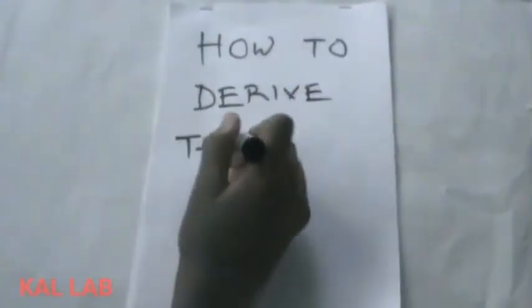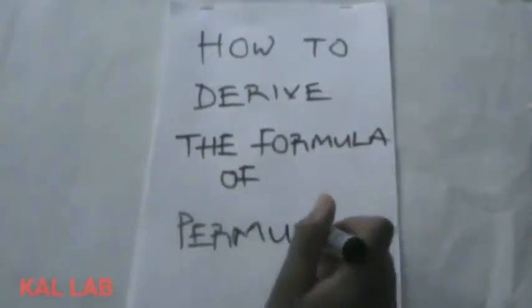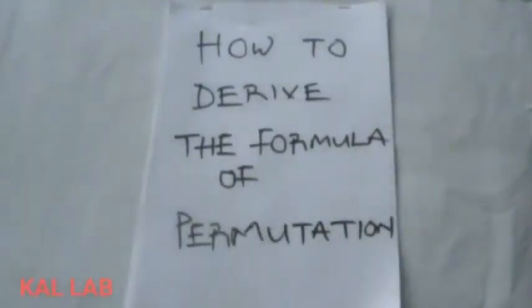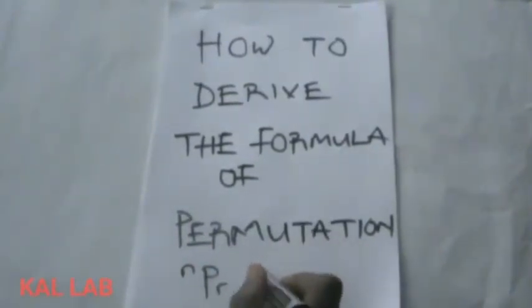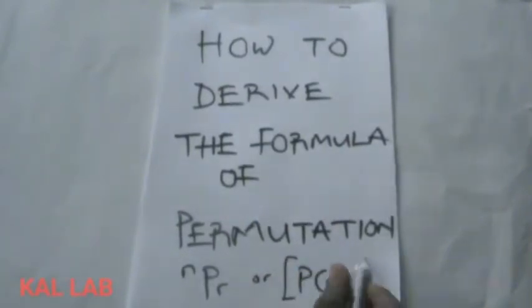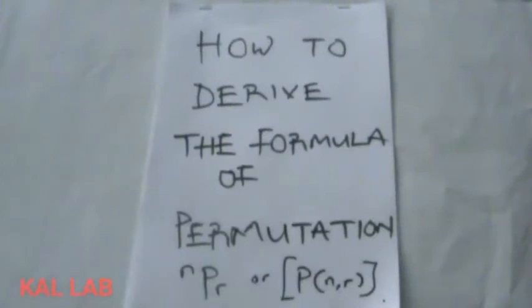Good day viewers, today we'll be looking at how to derive the formula of permutation, which is nPr or as the case might be, Pnr. So all we need is just the basic knowledge about permutation from what we all know.